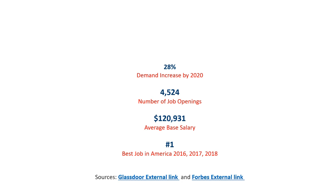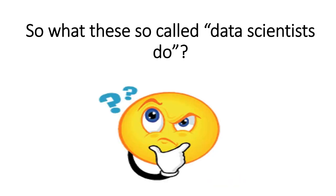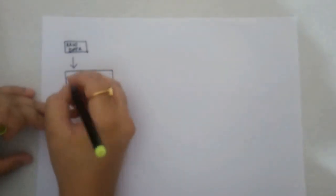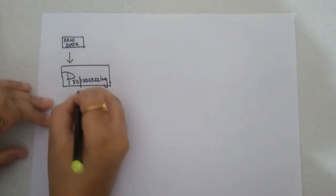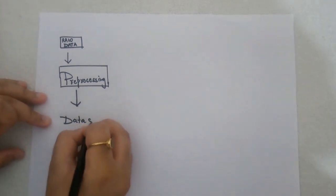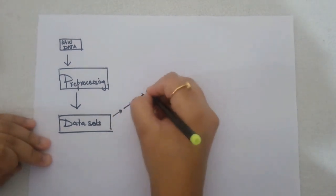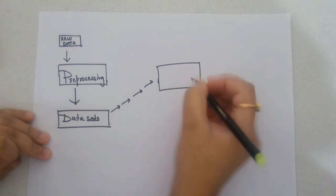So what are the roles of a data scientist and what exactly do they do? First, the raw data — they get it from huge resources such as Facebook data, Google data, GPS data, and sensor data. All of this comes in unstructured and structured formats, and there are different types of data formats. These raw data are then pre-processed by a data scientist and then converted into a dataset.